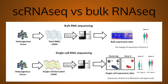For single-cell RNA sequencing, the pipeline is different because every single individual cell is barcoded and thereby sequenced. You get single-cell expression data, which we'll talk about more in the next slide.